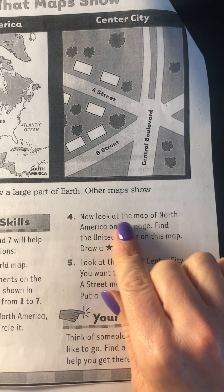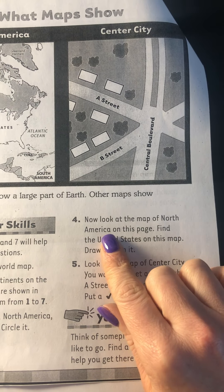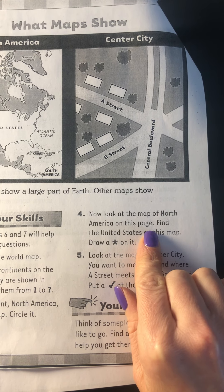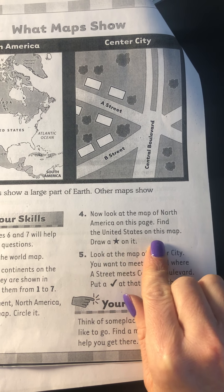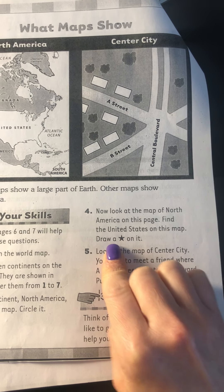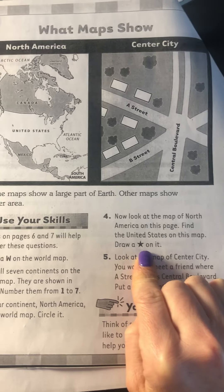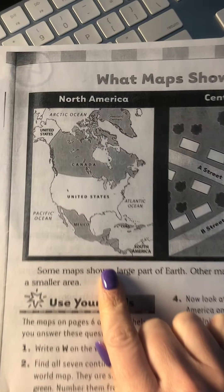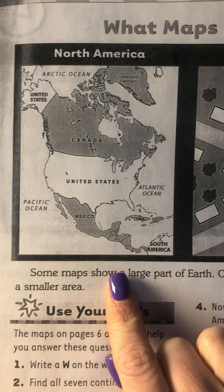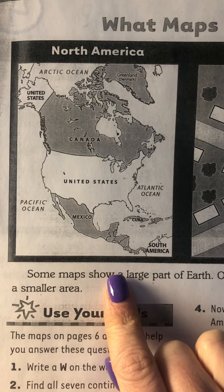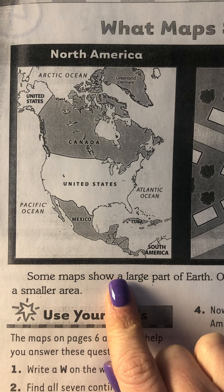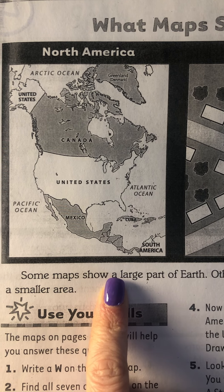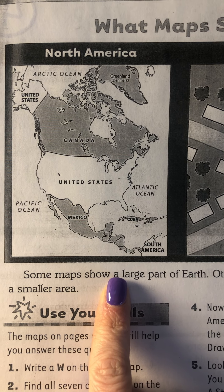Number four: now look at the map of North America on this page. Find the United States on this map and draw a star on it. So this map, page seven, North America — where is the United States? Find it, draw a star.